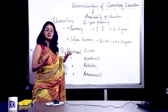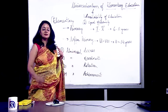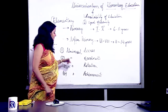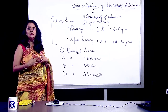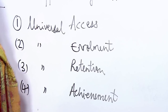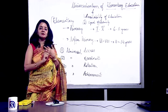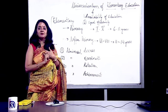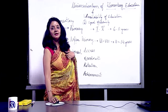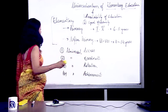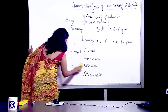These are the two concepts under universalization of elementary education. The four things it is trying to achieve are: universal access — everybody gets access to study; universal enrollment — everybody gets admission in school; universal retention — retaining the child in school; and universal achievement — the child is able to pass his exams. Now there are various projects which have come up under the universalization of elementary education, and we will discuss all these projects.